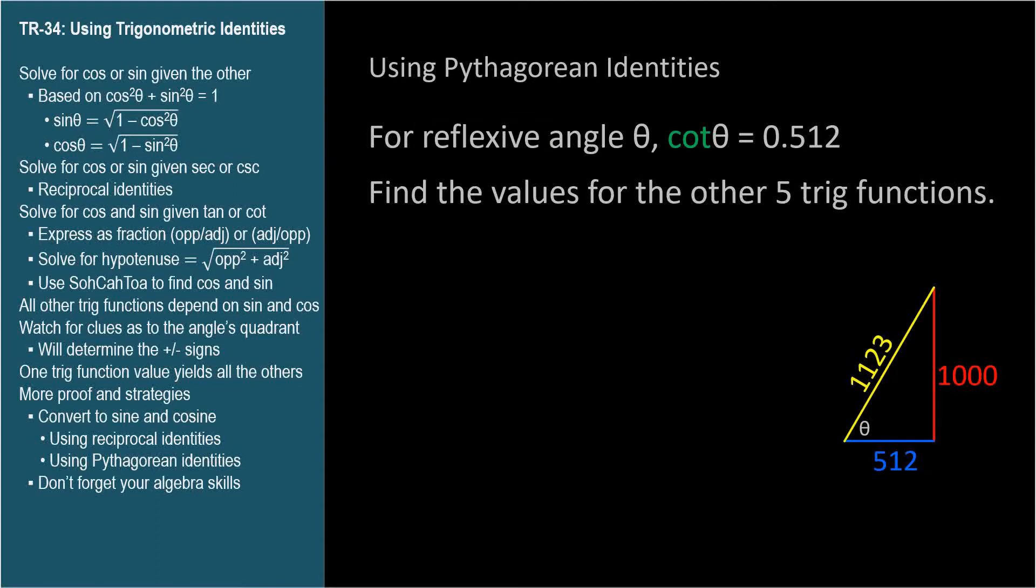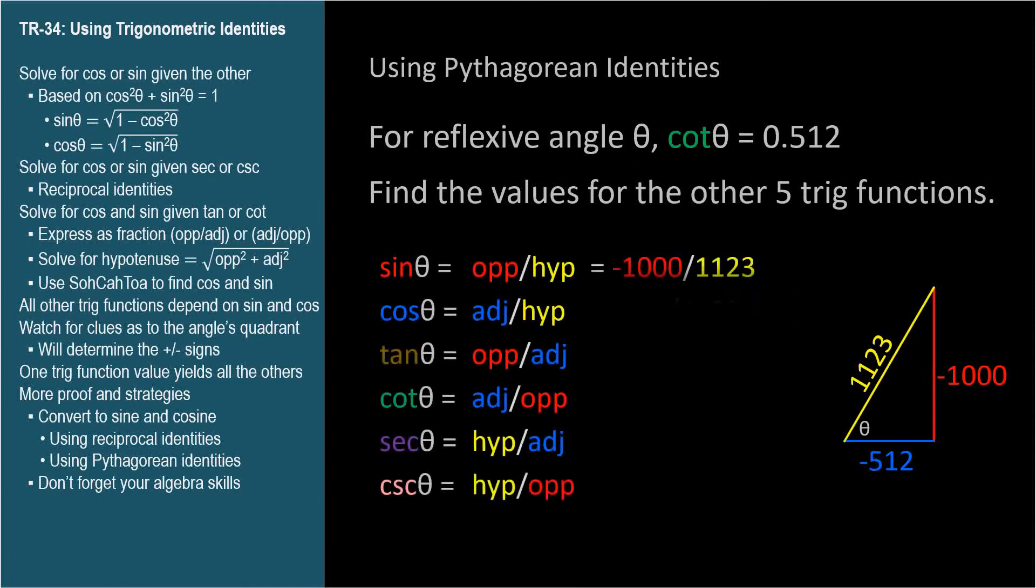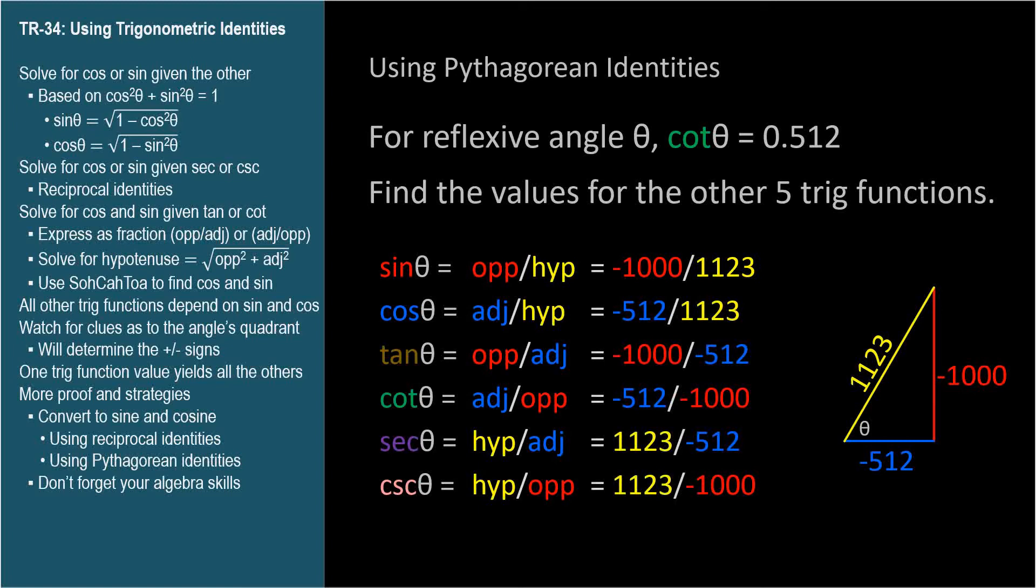The angle is a reflex angle, which means its point is down here in quadrants 3 or 4. This means it has a negative sine. Since the cotangent is positive, and it's the ratio between cosine and sine, the cosine must also be negative. So let's change our triangle labels so adjacent and opposite are both negative.